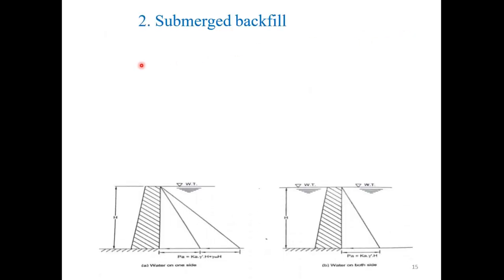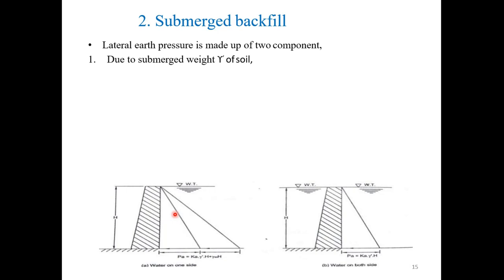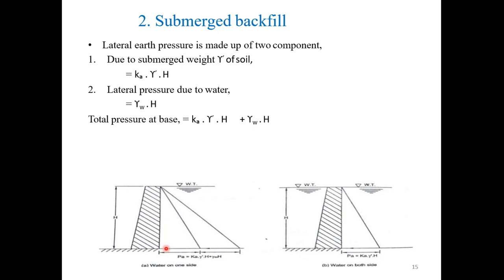Second case — submerged backfill: When a water mass is acting on the retaining wall, we must consider the pressure coming from the water. There are two types of pressure. The first is due to the submerged unit weight of the soil mass, giving Ka × γ' × H. The second is the lateral pressure due to the water mass, giving γ_water × H. So the total pressure is Ka × γ' × H + γ_water × H.